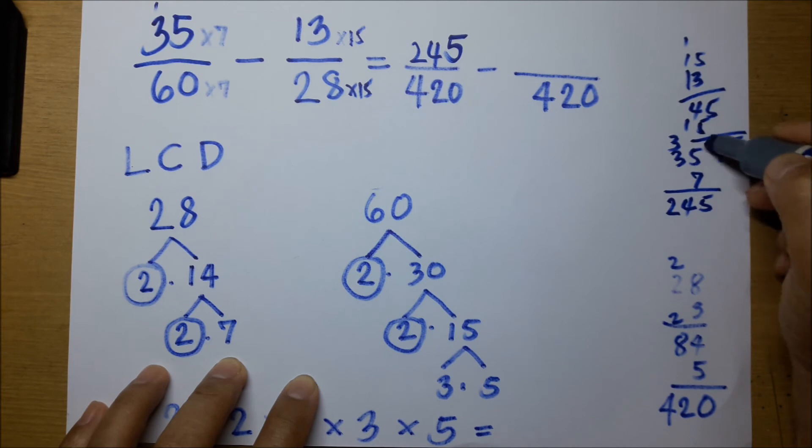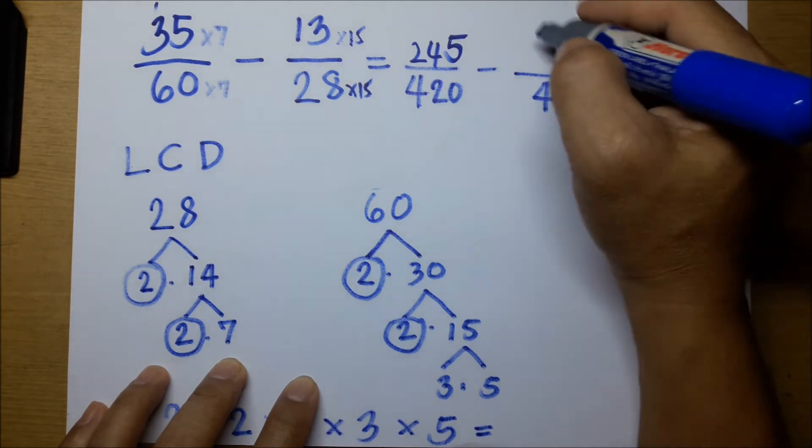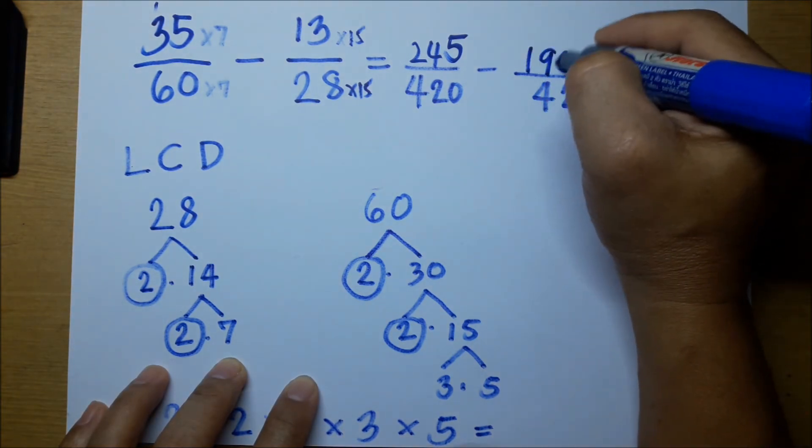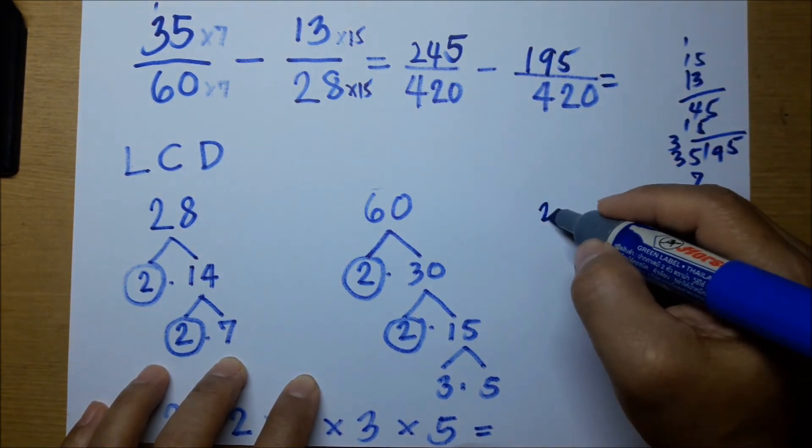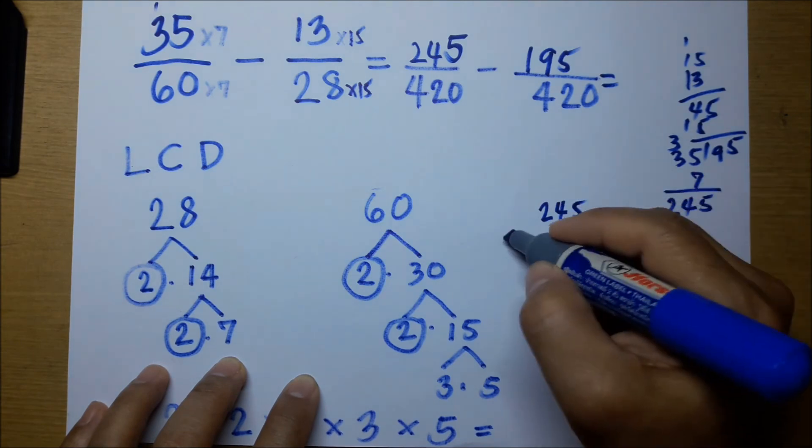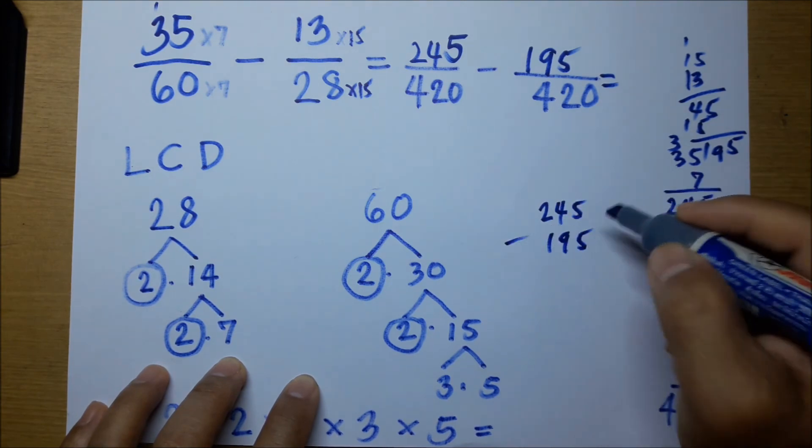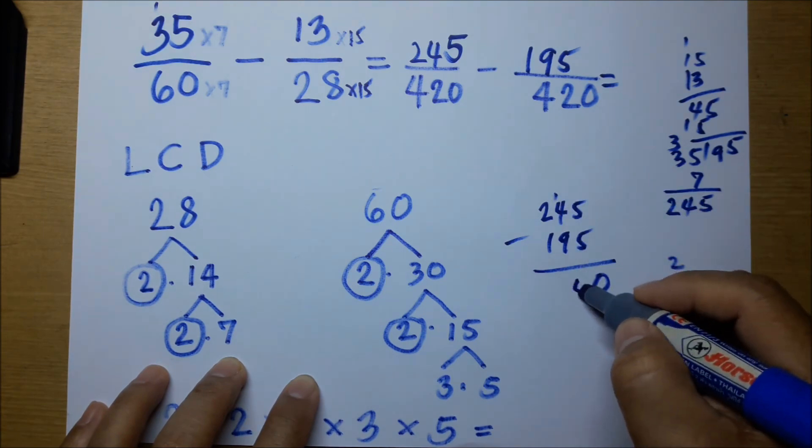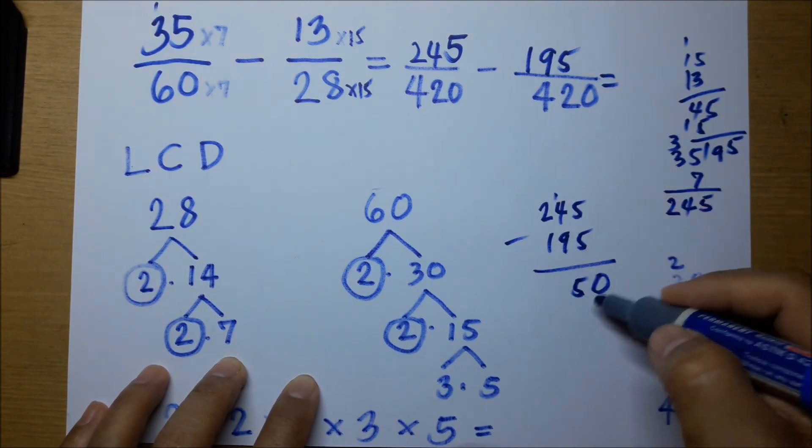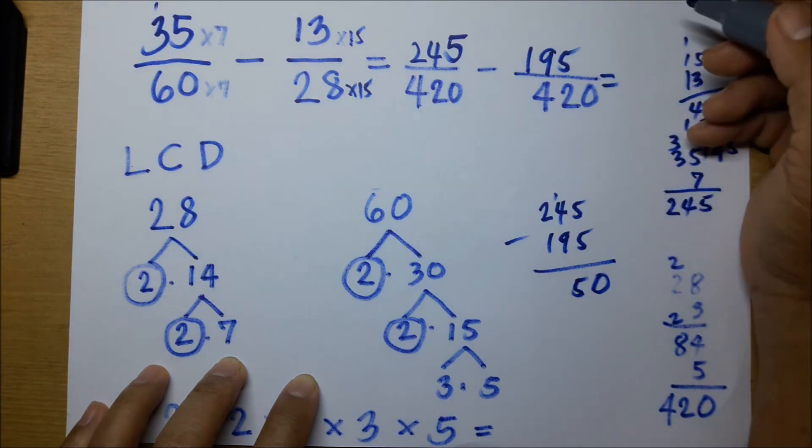So 195 gives us the answer, 245 minus 195 gives us 50, over 420.